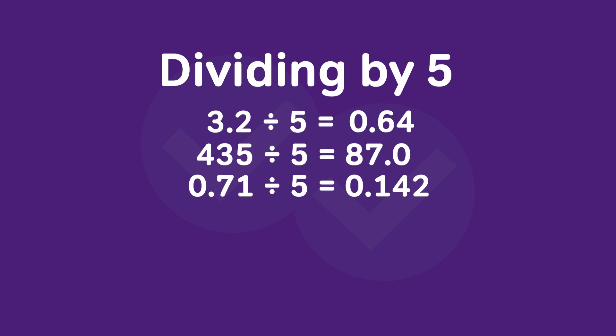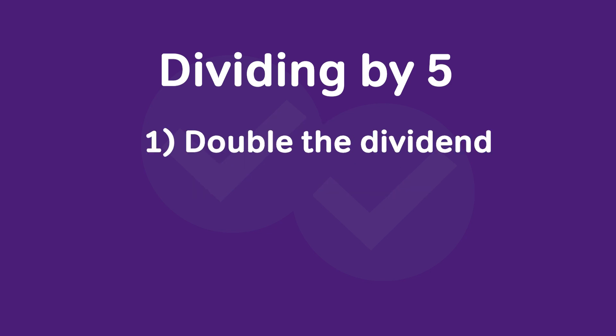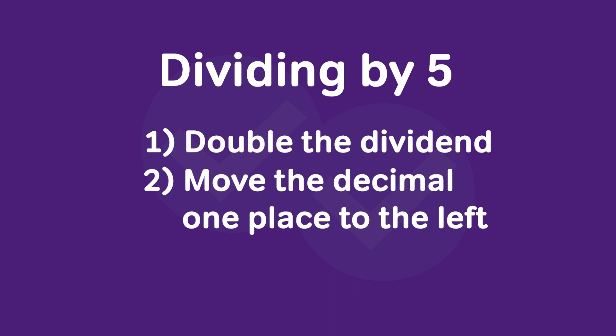So, to divide by 5, our first step is to double the dividend. And our second step is to take our decimal point and move it one space to the left.